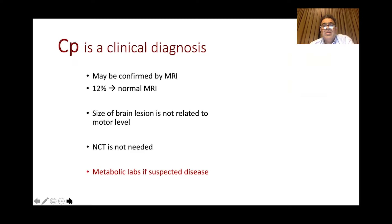CP is a pure clinical diagnosis. It may be confirmed by MRI, but MRI needs anesthesia in children, which is why it's not commonly used. The size of the brain lesion does not correlate with the level of motor deficits. Nerve conduction testing is not needed. Metabolic labs are only needed when you suspect a metabolic error or disease.